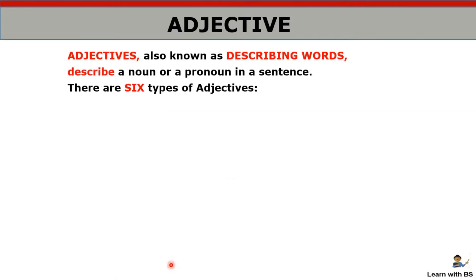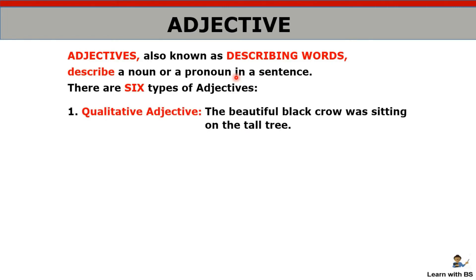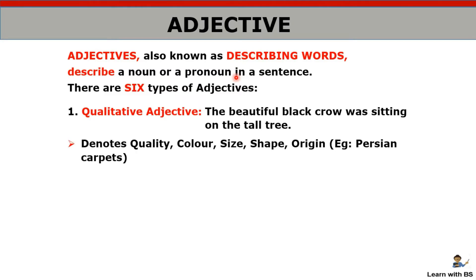So we have eight pronouns. Next is adjective, which I told you are also called describing words because they give more information about a noun. We have six types of adjectives. Qualitative adjective — which describes quality, size, color, shape — like 'beautiful', 'tall' — these are qualitative adjectives.